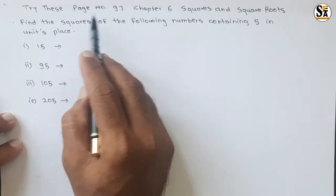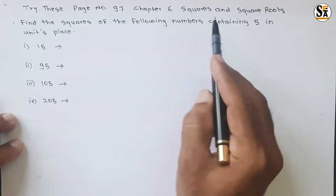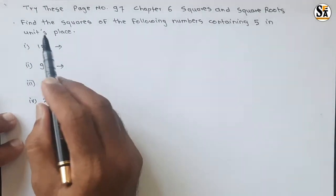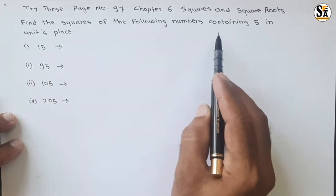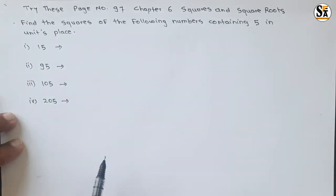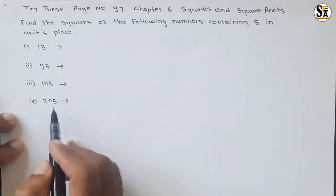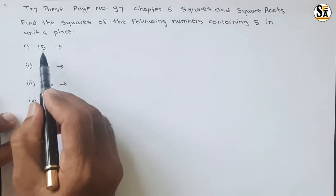The question under Try These section, page number 97, Chapter 6 Squares and Square Roots: Find the squares of the following numbers containing 5 in unit's place. The numbers are given and at the unit place, 5 is given.